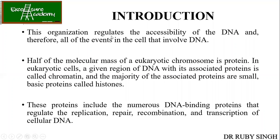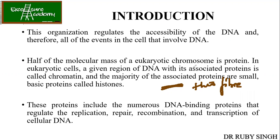This organization regulates the accessibility of DNA, and therefore all events in the cell that involve DNA. Half of the molecular mass of a eukaryotic chromosome is protein. In eukaryotic cells, a given region of DNA and its associated protein is called chromatin — the thin fiber we see in the decondensed form. Once this gets completely condensed, it becomes the chromosome. So the difference between chromatin and chromosome is that chromatin is the decondensed form, while chromosome is the compacted form.